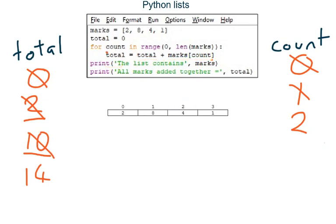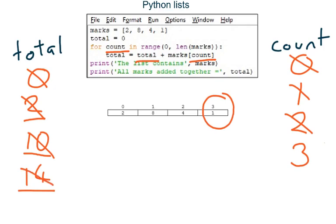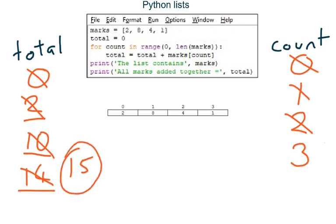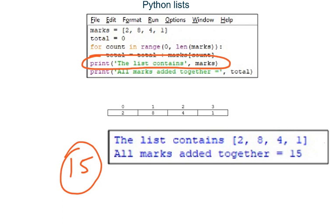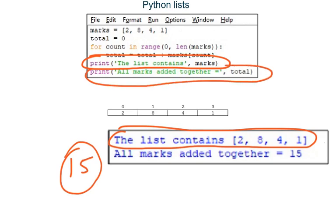The final time around the loop, count changes to 3; total is 14, and marks position 3 contains 1. Fourteen plus 1 is 15, so total becomes 15. At the end of the loop the value stored in variable total is 15. After the loop, line five outputs the list contents, and the last line outputs the total: 15.